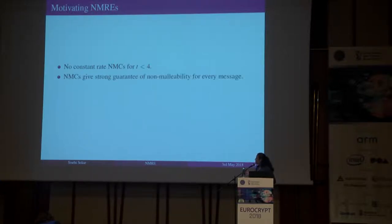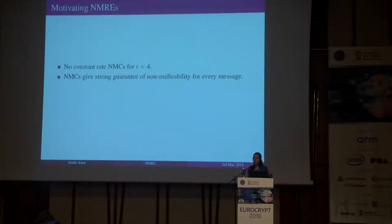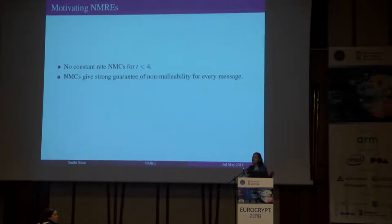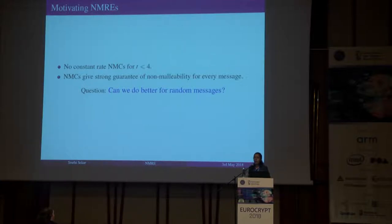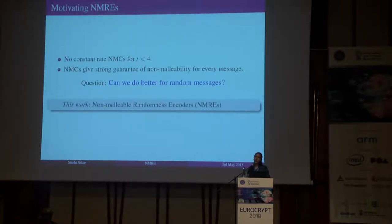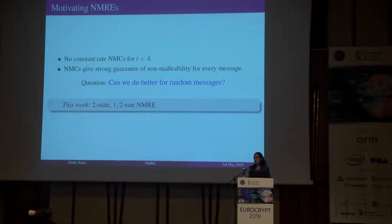Non-malleable codes give a strong guarantee of non-malleability for all messages. But do we really need that? Looking at cryptographic applications such as security against related key attacks, the typical non-malleability guarantee needed is only for random uniform messages — the key is a uniform message. With that motivation, in this work we ask: can we do better in terms of rate if we only seek non-malleability for random messages? It turns out we can, by introducing tools called non-malleable randomness encoders, and we construct an efficient one achieving rate one half for the two-split state family.